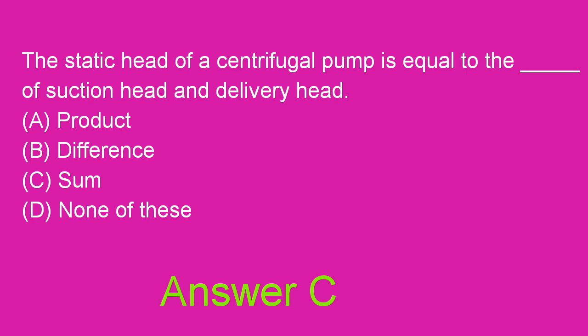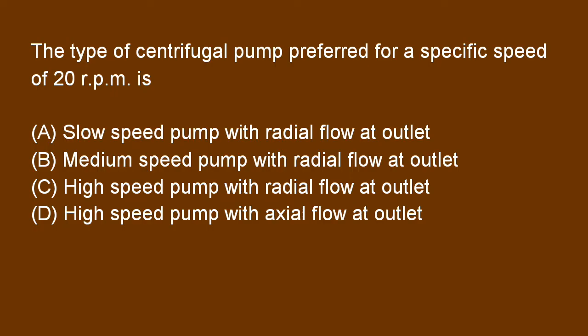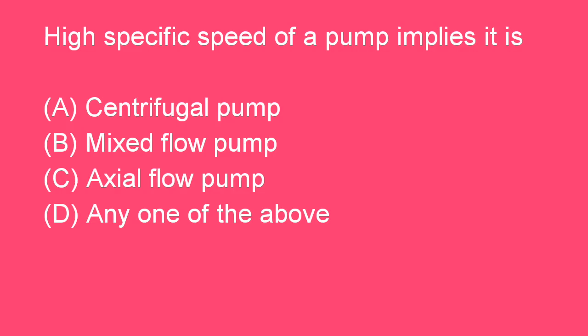Next question: The type of centrifugal pump preferred for a specific speed of 20 RPM is a slow speed pump with radial flow at outlet. Next question: High specific speed of a pump implies it is an axial flow pump. Option C is right.